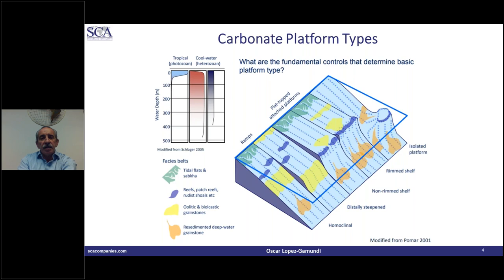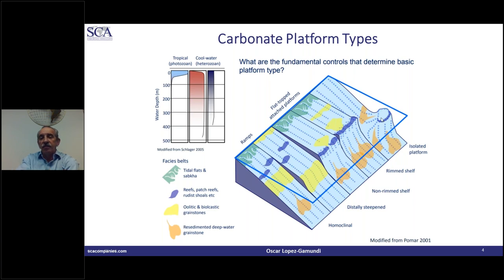What we are looking at here is the transition from ramps — very low slope carbonate systems — to what we normally call a rim shelf or reef margins. We have a lot of different types with the classic subdivision: a continent, a lagoon, a reef margin, and then the slope. And then we keep going to the isolated platforms, or isolated carbonate buildups, which is what we will be discussing.